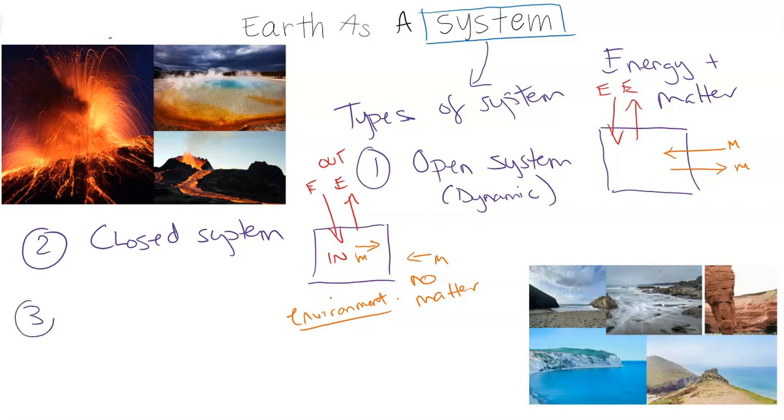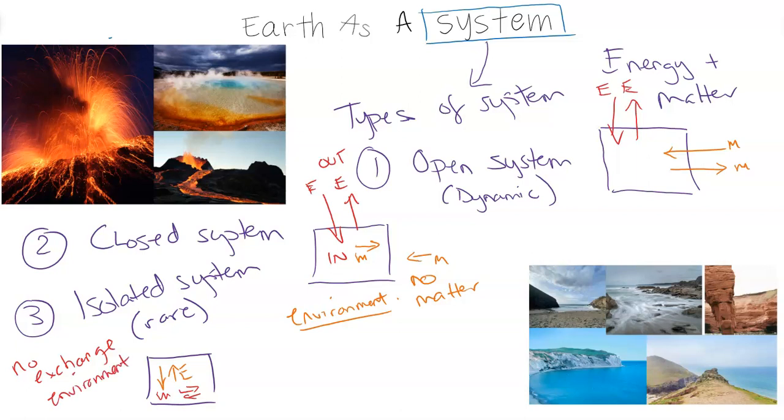The third one, which is very hard to find, very hard and rare to find in nature, is called an isolated system. This one's rare. I'm going to put very rare. And this one, if I just draw my little system box right there, isolated, obviously, by the definition of the word, there is energy trapped inside, and also matter is trapped inside. There is no relationship, no link, no exchange. There's no exchange with the outside environment.